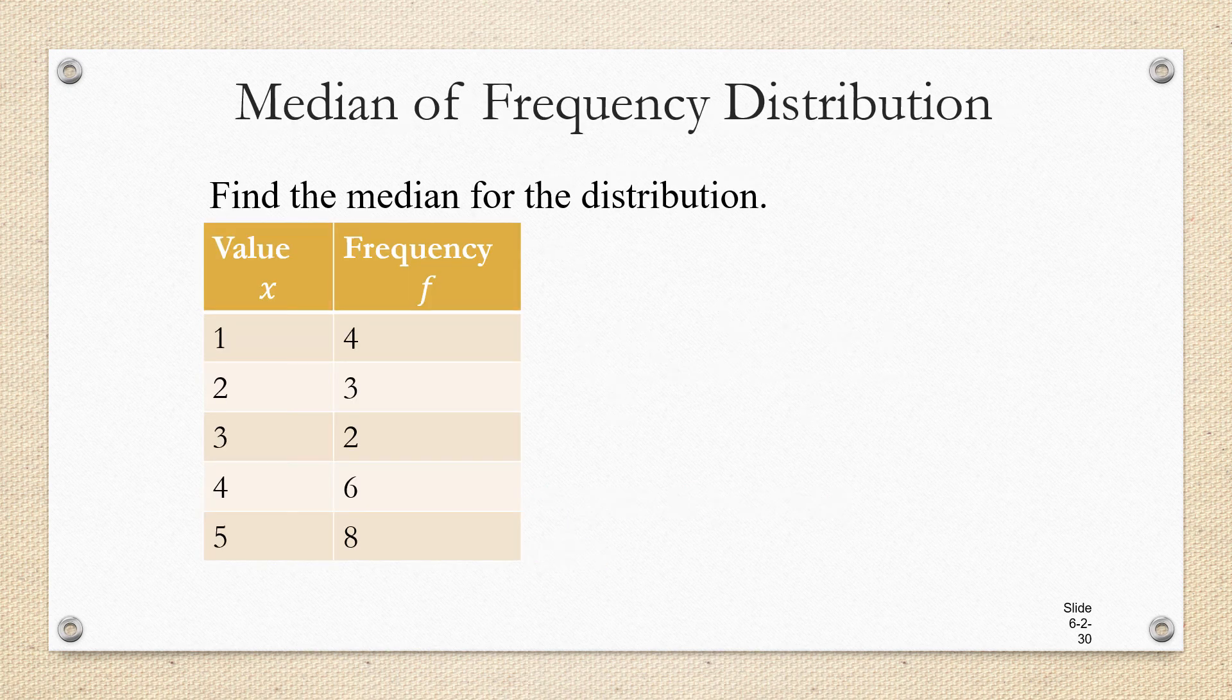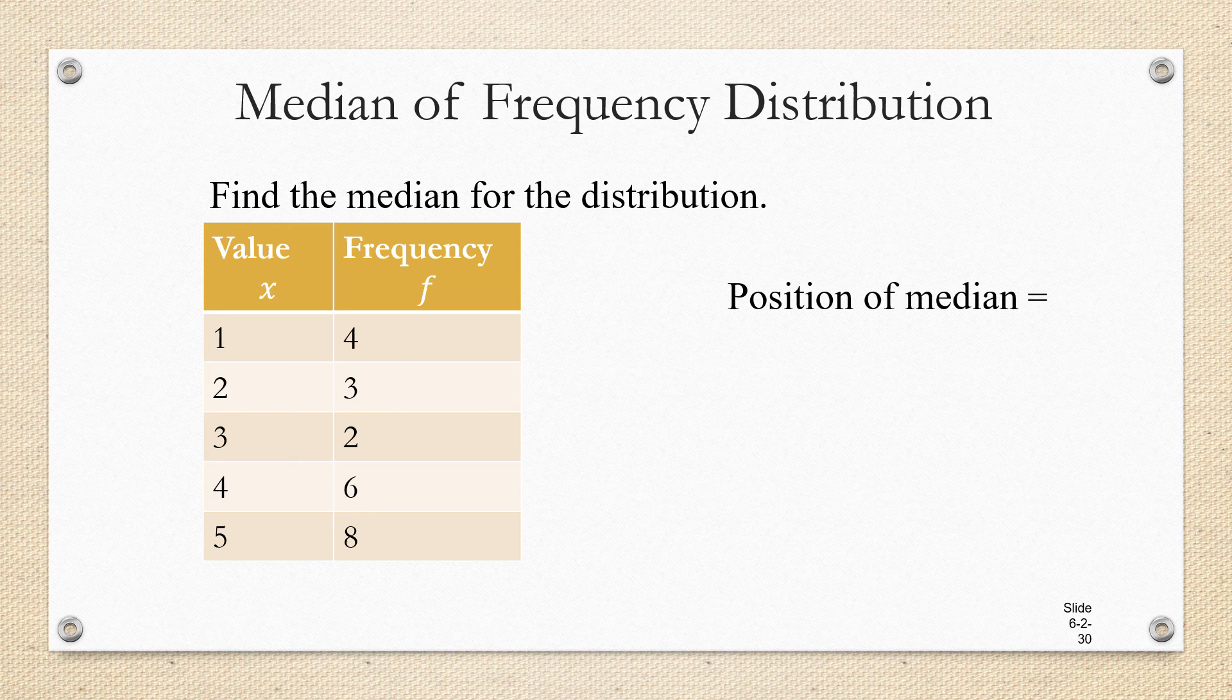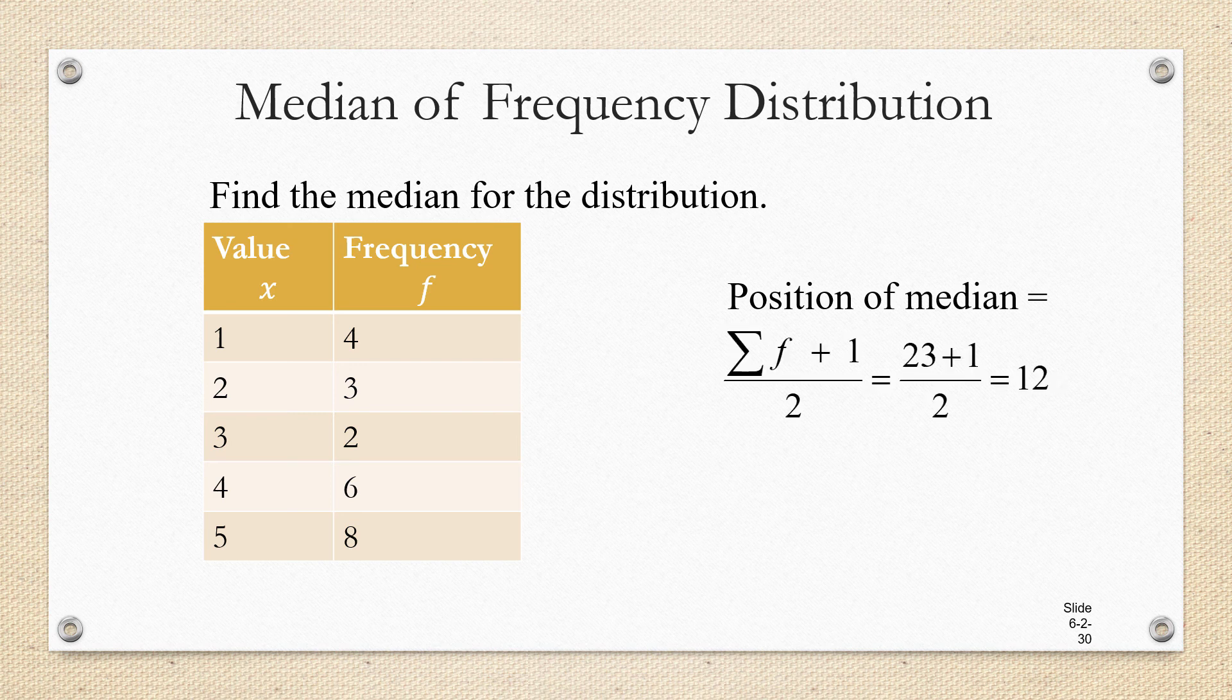Let's look at finding the median of a frequency distribution. The first thing we need to do is to find the position of the median among the data. For that, we need n plus 1 over 2, but we don't have n. So what we're going to do is we're going to add up the frequencies. If you add 4, 3, 2, 6, and 8, you're going to get 23. That is n.